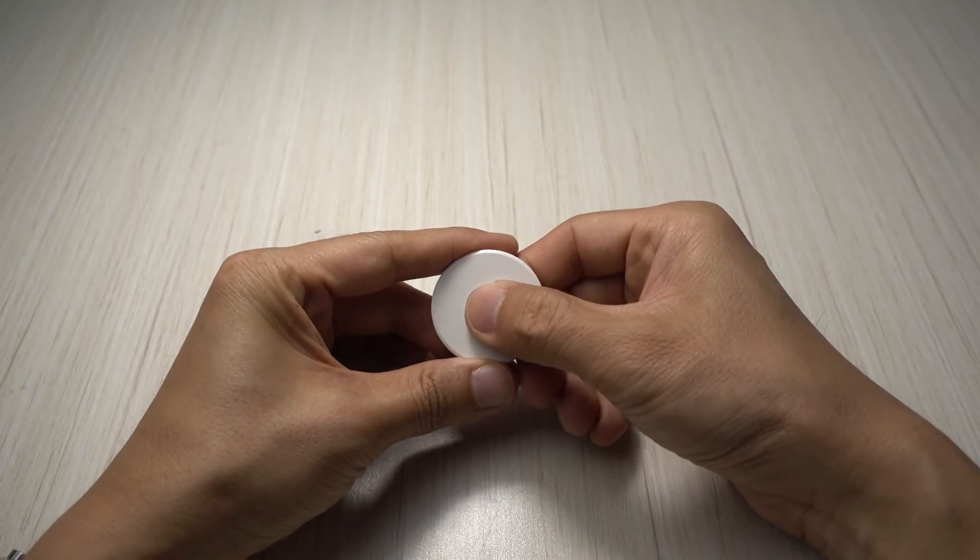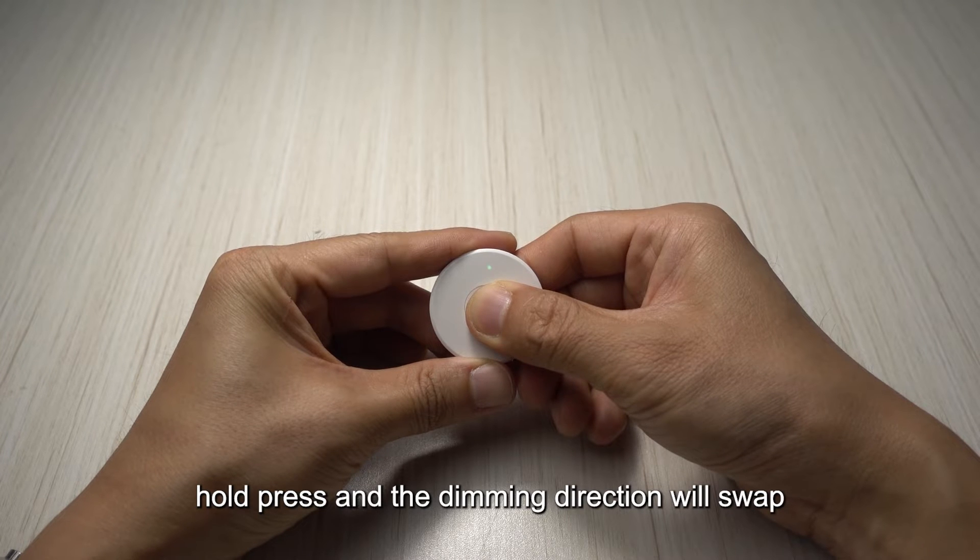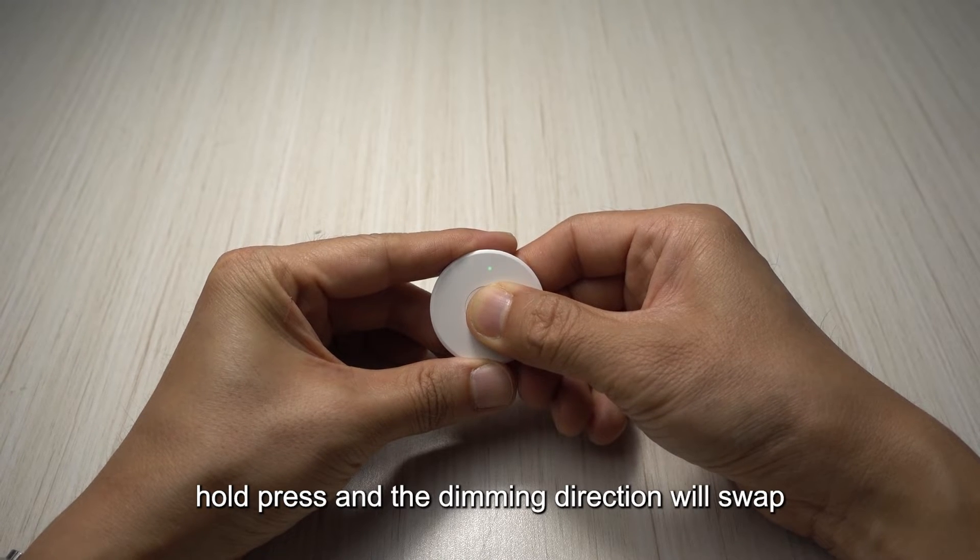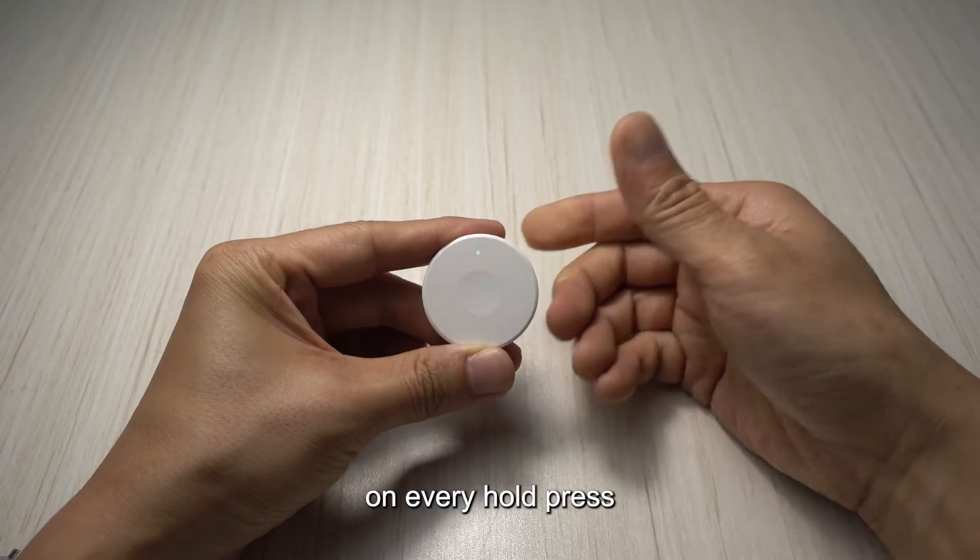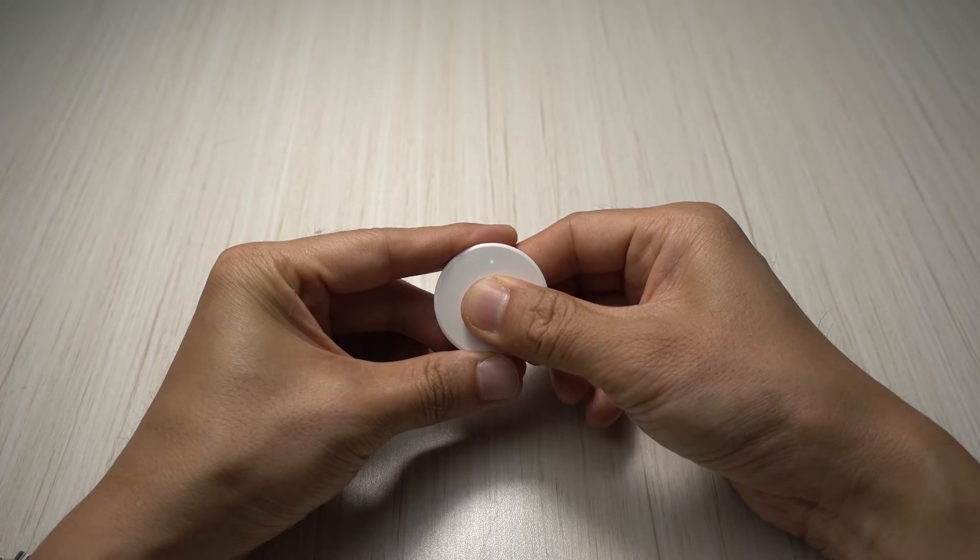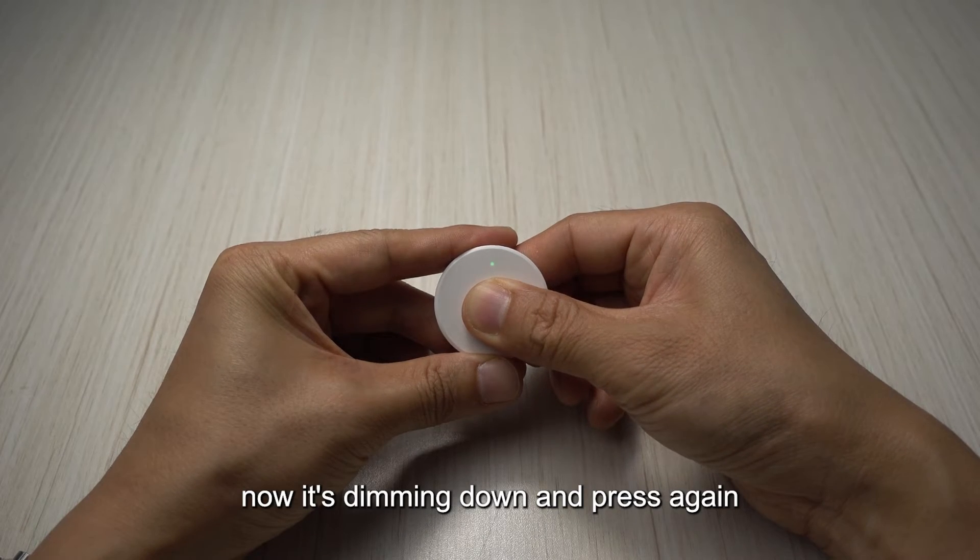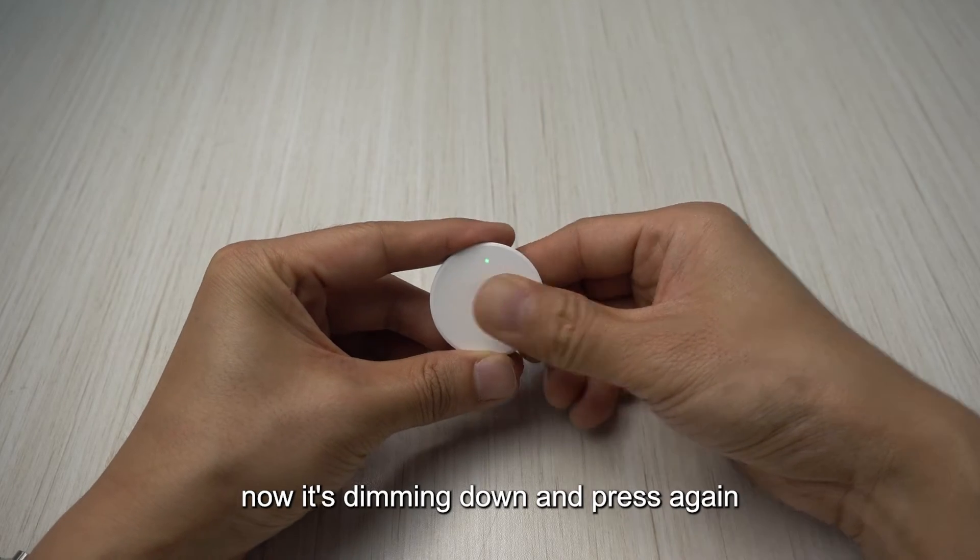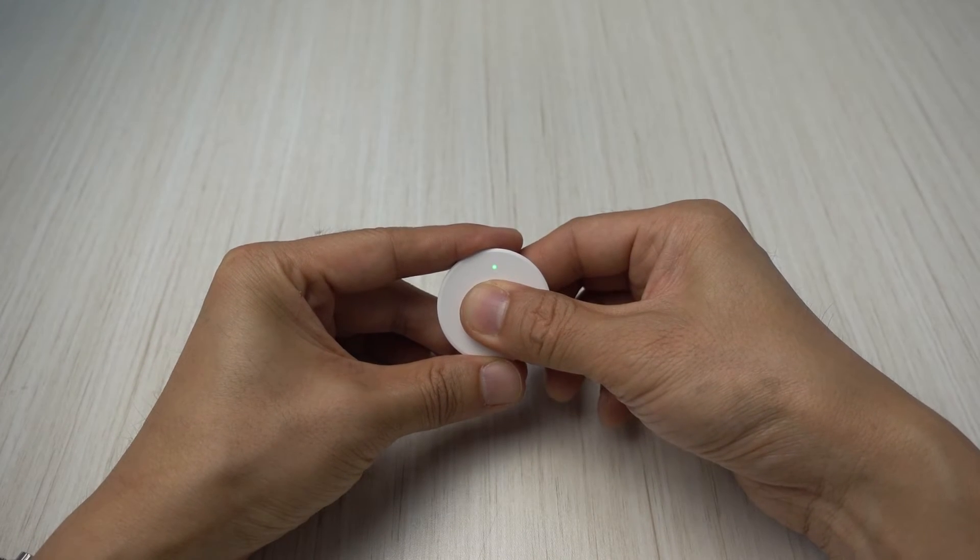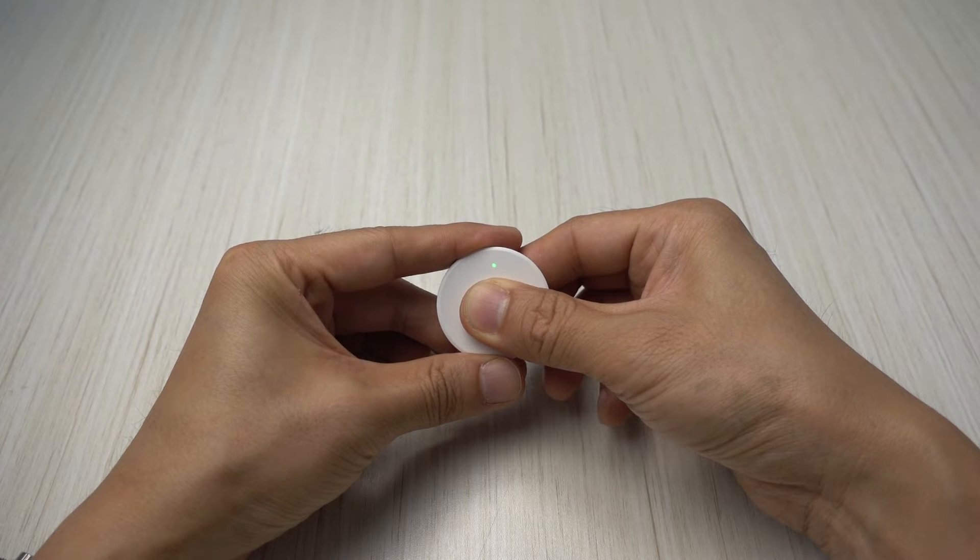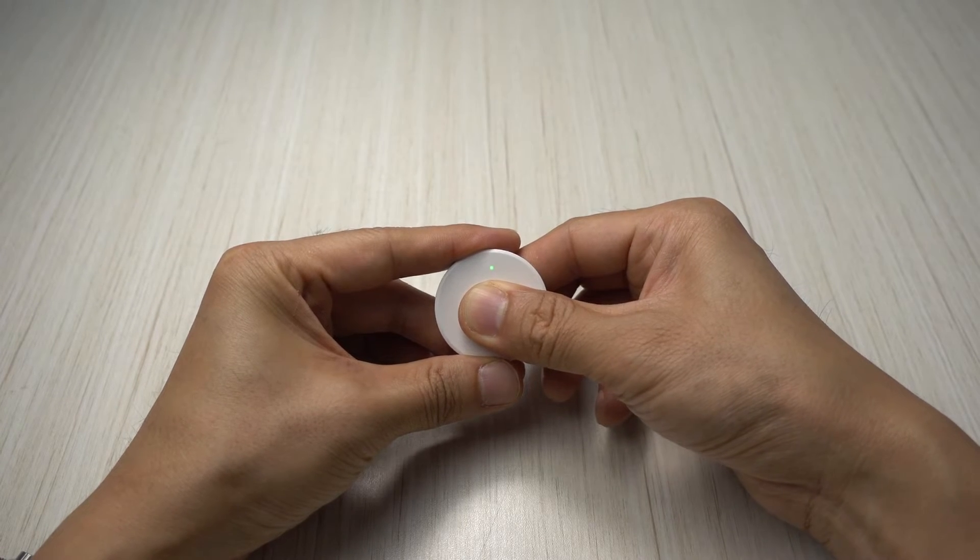To dim the light hold press and the dimming direction will swap on every hold press. Now it's dimming down and press again and press again will dim up.